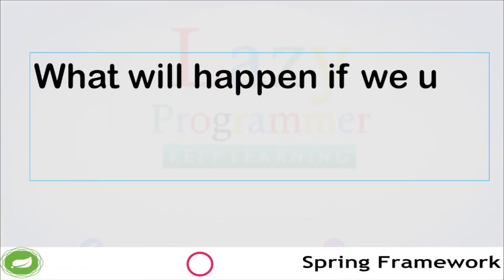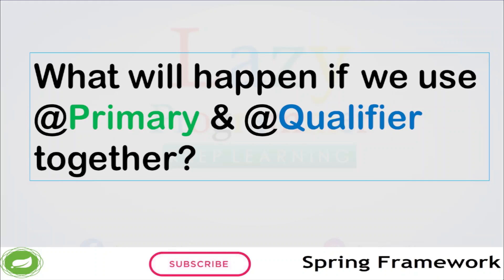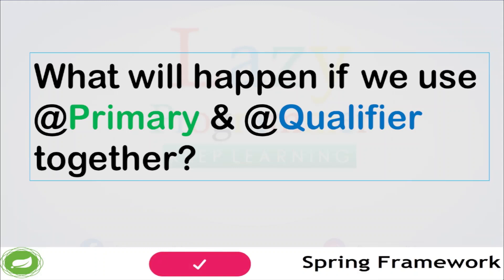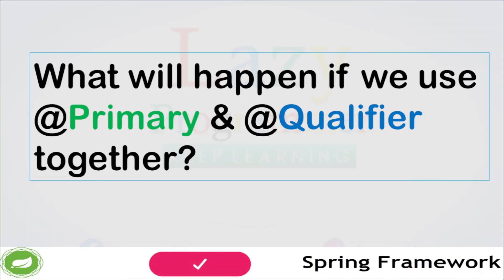The question arises: what will happen if we use @Primary and @Qualifier together, since the working of both looks similar? This is also a potential interview question. Both annotations can be used together, but only one can be executed at a time because they have different priorities. @Qualifier has higher priority than @Primary. So if both annotations are used, @Qualifier will be considered.